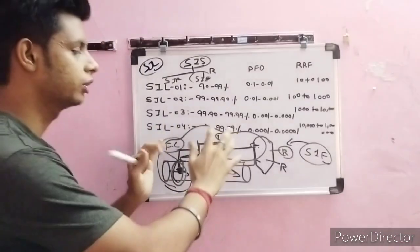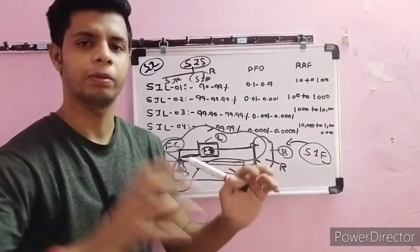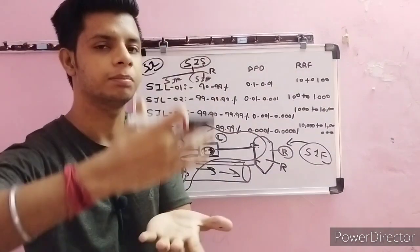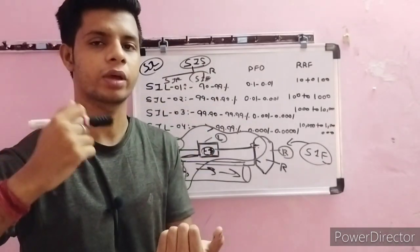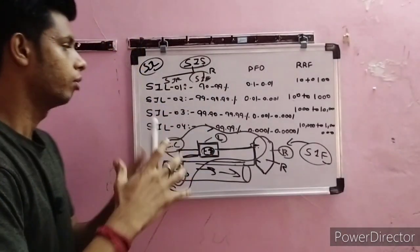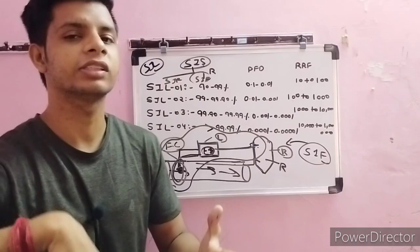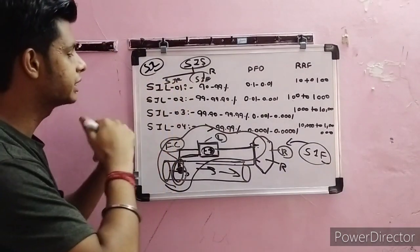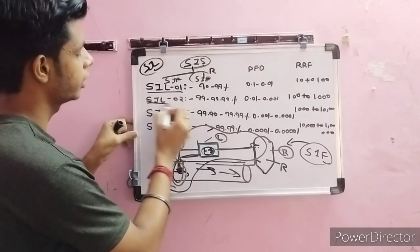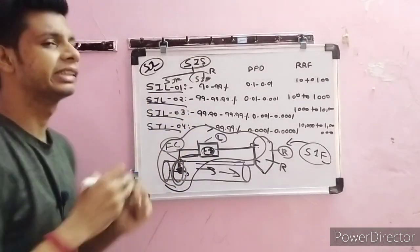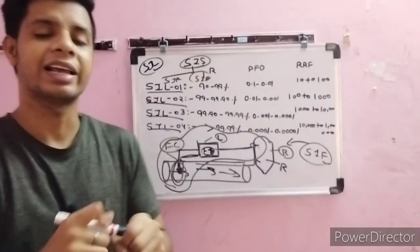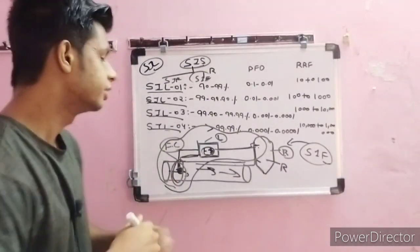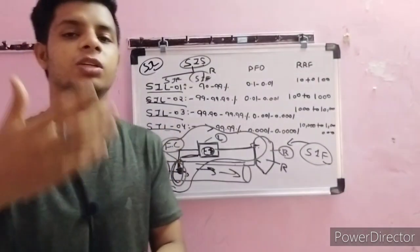Now that we understand these three concepts, let's discuss the types of SIL. There are generally four types: SIL 1, SIL 2, SIL 3, and SIL 4. SIL 1 means less protection provided by a safety function, while SIL 4 means the highest level of protection provided by a safety function.